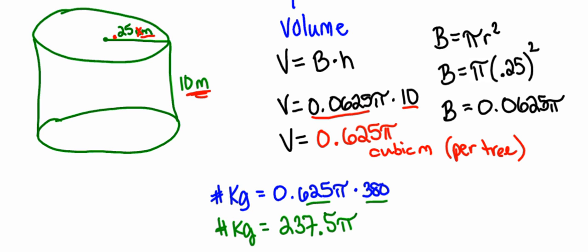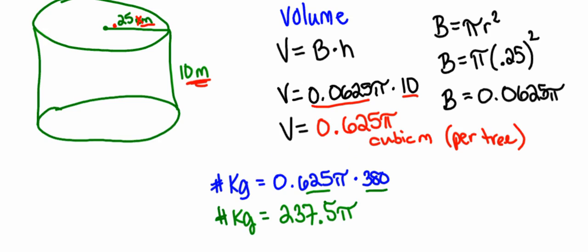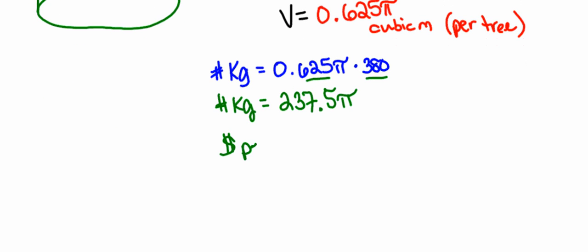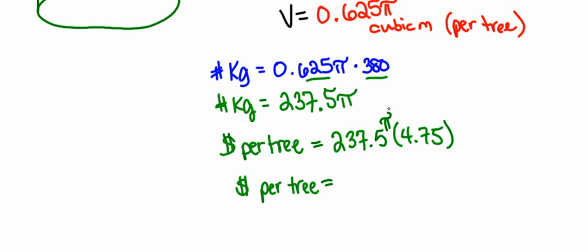The other thing I know is that for every kilogram, we're going to earn $4.75. So to find the dollar amount I'm going to earn in each tree, I'm going to say money per tree. I'm going to multiply the kilograms, 237.5π, times $4.75 that I get for each kilogram. Using my calculator, I multiply 237.5 times 4.75, which gives me 1,128.125π dollars per tree.